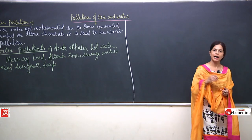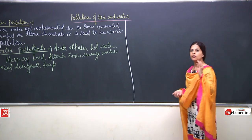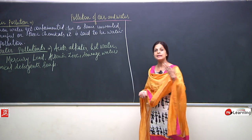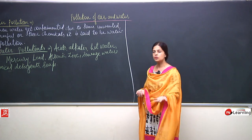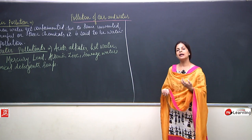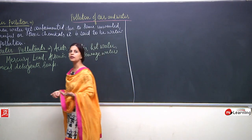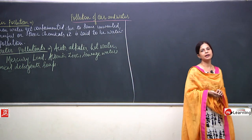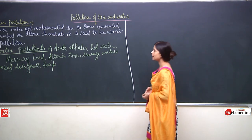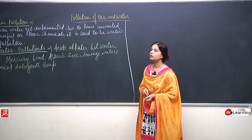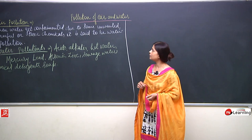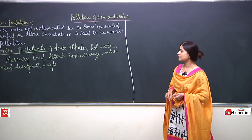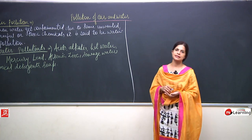The substances which are responsible for creating water pollution are known as water pollutants. It can be acids, alkalis, hot water, detergents, soaps, untreated sewage water, or other chemicals like mercury and lead. When they get mixed up with fresh water, they pollute the water. Now we will discuss the causes of water pollution.